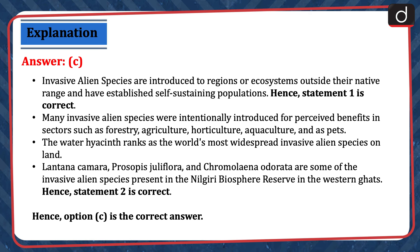Invasive alien species are introduced to regions or ecosystems outside their native range and have established self-sustaining populations — hence statement one is correct. Many invasive alien species were intentionally introduced for perceived benefits in sectors such as forestry, agriculture, horticulture, aquaculture, and as pets. The water hyacinth ranks as the world's most widespread invasive alien species on land. Lantana camara, Prosopis juliflora, and Chromolaena odorata are some of the invasive alien species present in the Nilgiri Biosphere Reserve in the Western Ghats — hence statement two is correct. Therefore, option C is the correct answer.